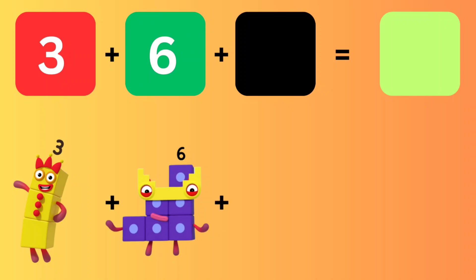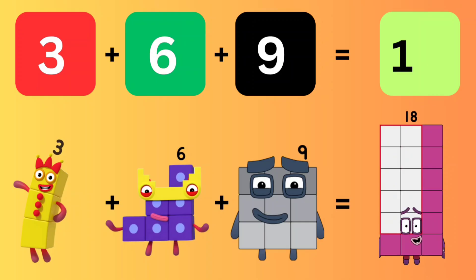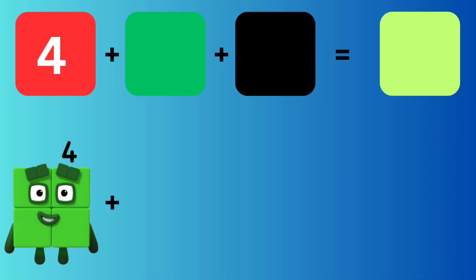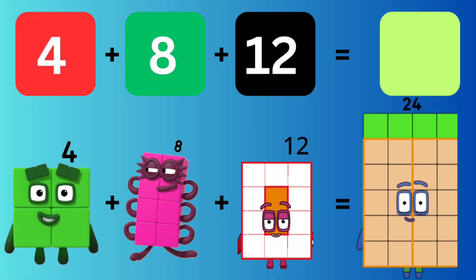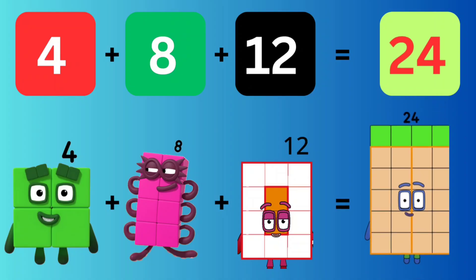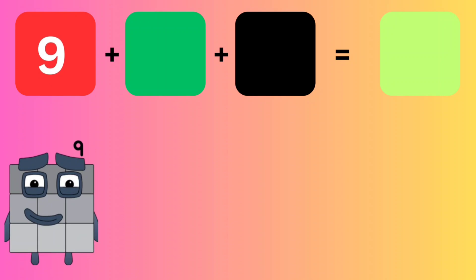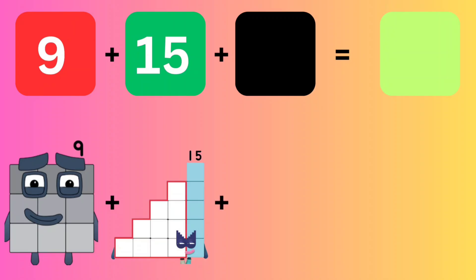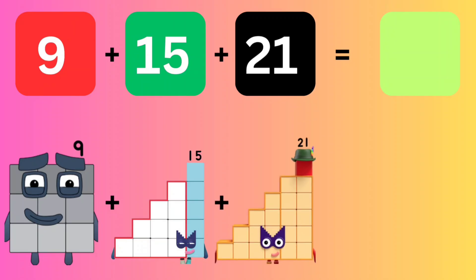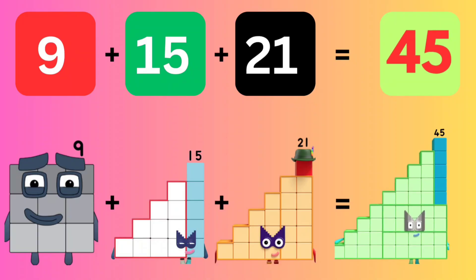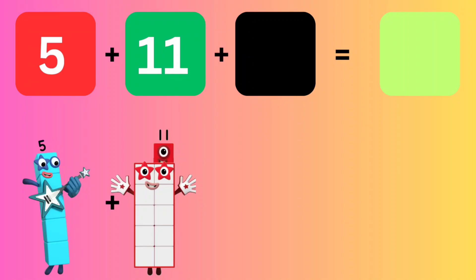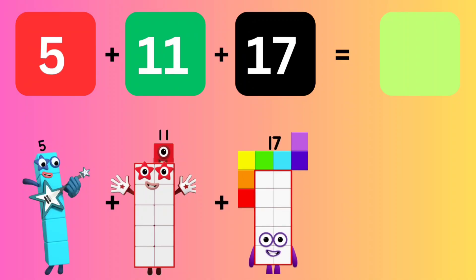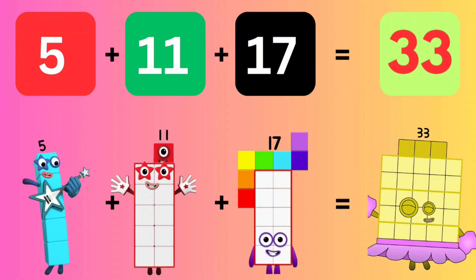Let's repeat again. 3 plus 6 plus 9 equals 18. 4 plus 8 plus 12 equals 24. 9 plus 15 plus 21 equals 45. 5 plus 11 plus 17 equals 33.